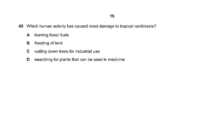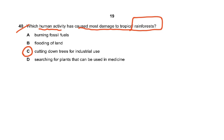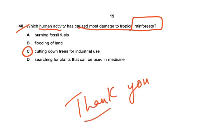Question number 40: Which human activity has caused most damage to tropical rainforests? Burning fossil fuel — why would they do that in a forest? Flooding of land — no. Searching for medicinal plants causes minimal damage, as you take just a few leaves or a small part of a plant. Cutting down trees for industrial use is the most damaging human activity. That completes this paper — thank you very much and best of luck.